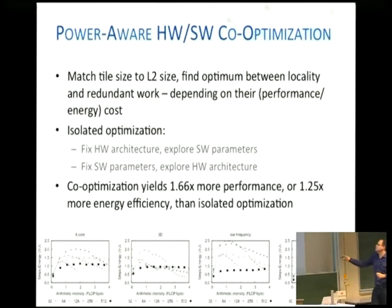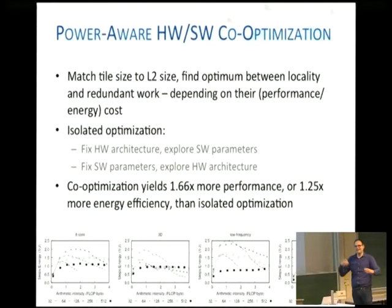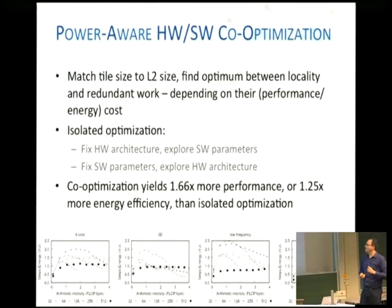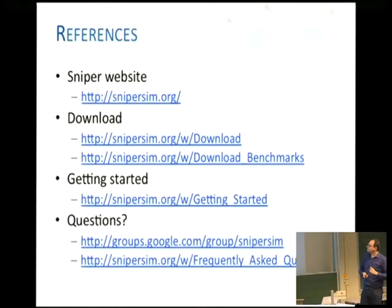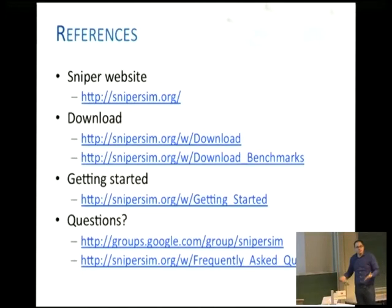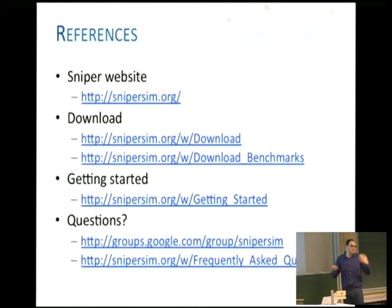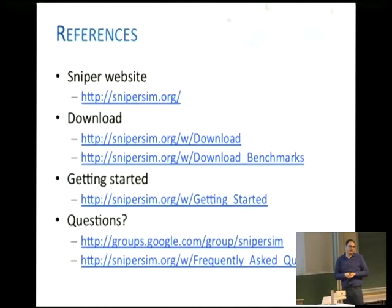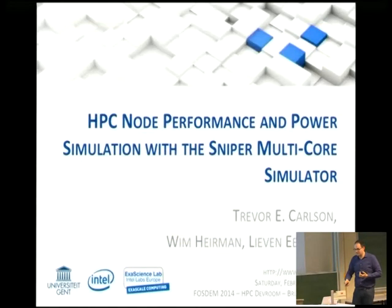To summarize: if you do co-optimization, you can do better than optimizing just software or just hardware alone. Sniper is available to download today. We have a pretty easy way to get you started, and we have a pretty active mailing list. We try to respond fairly quickly. If there are any questions, I'd love to answer them. Thank you.